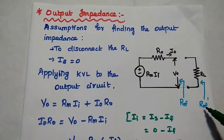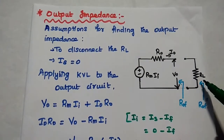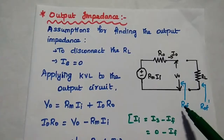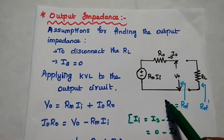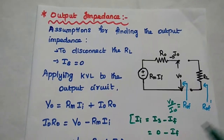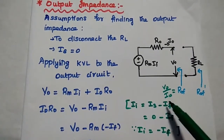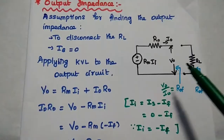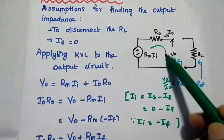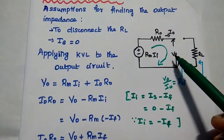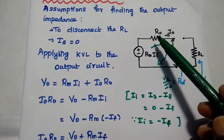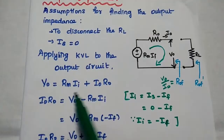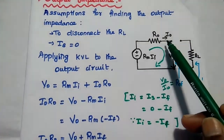We find the output impedance with feedback ROF, and then the output impedance with load RL, denoted ROF'. The output impedance with feedback equals output voltage divided by output current. We apply Kirchhoff's voltage law to the output circuit. The output voltage VO equals Rm·II plus IO·RO.